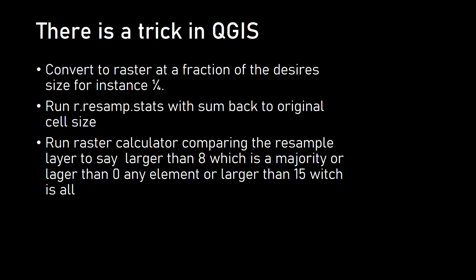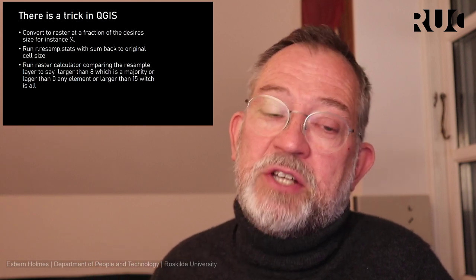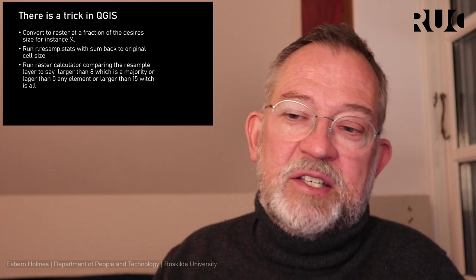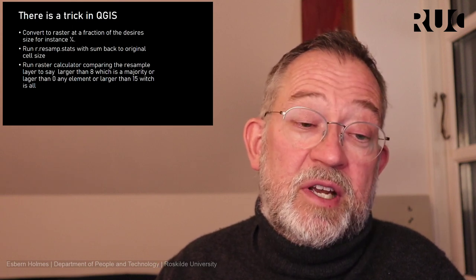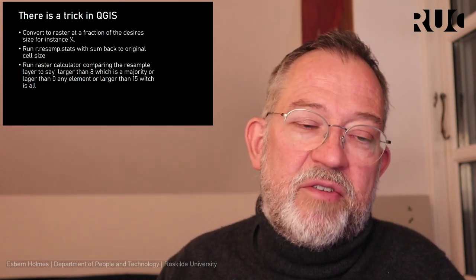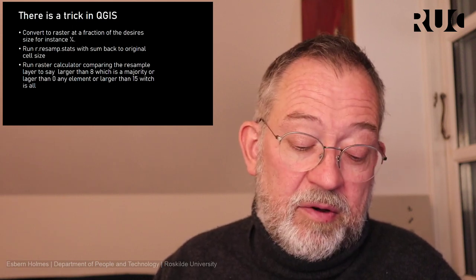Those are the basic rules for doing vector to raster conversion. The really important thing is to ensure that your output raster aligns with the raster layer you're going to do calculations on. I hope this saves you a lot of frustration when working with vector-to-raster conversion in QGIS, because it can be really annoying when raster cells do not align.